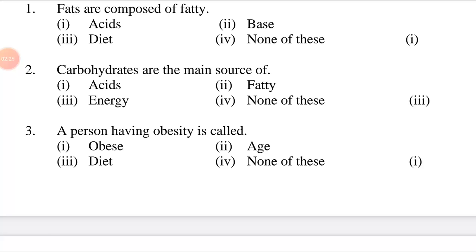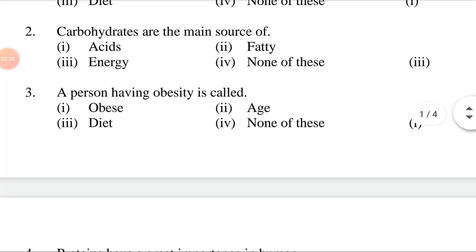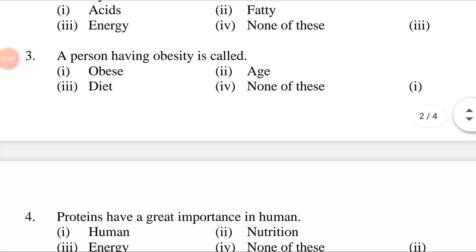Question 3: A person having obesity is called ___. Options: first, obesity; second, age; third, diet; fourth, none of these. Answer is first option: a person having obesity is called obese.